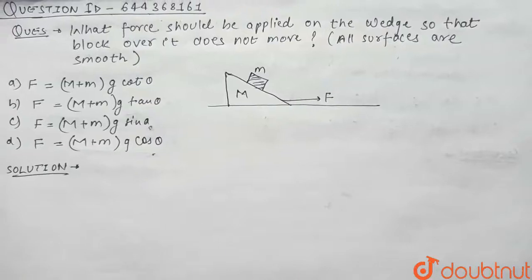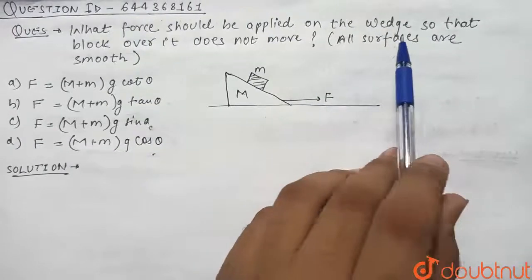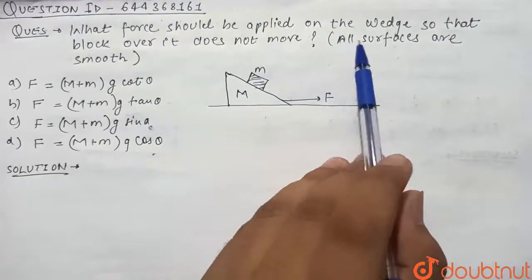Hello guys, so today's question is: what force should be applied on the wedge so that block over it does not move? All surfaces are smooth.